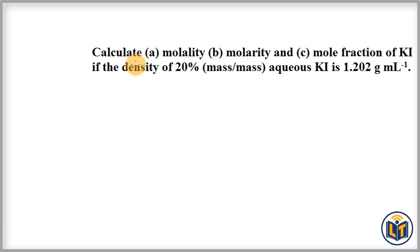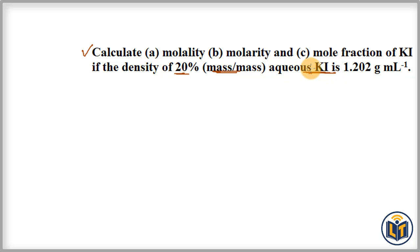Hello students. In this video I will discuss how to calculate molality, molarity, and mole fraction. The problem says: calculate molality, molarity, and mole fraction of potassium iodide (KI), if the density of 20% mass-by-mass aqueous KI solution is 1.202 g/mL. Since the solution is 20% mass-by-mass, the mass of solute is 20% and the rest is the solvent.